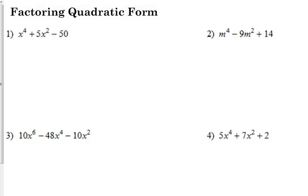The question is, what can I multiply together to get x to the fourth? x squared times x squared will give us x to the fourth. And we need to come up with factors of 50, one positive and one negative, that add to give us positive 5. That would be positive 10 and negative 5.